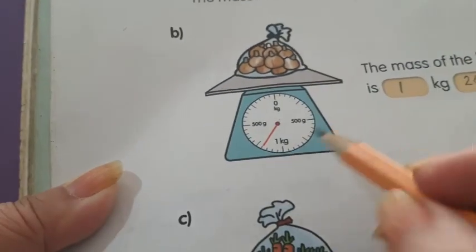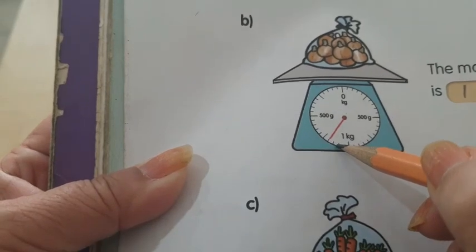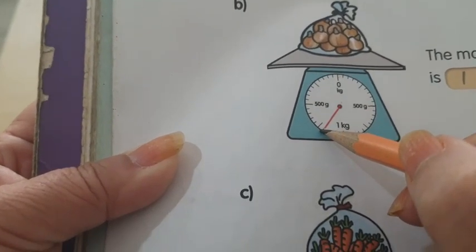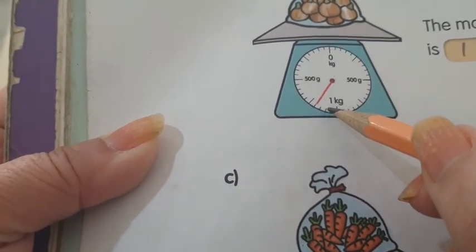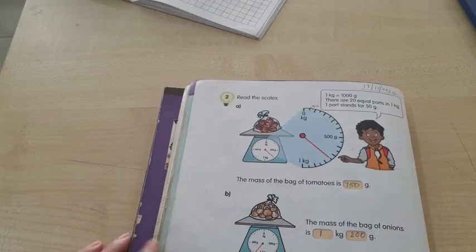50, 100, 150, 200. So I'm going to count again. Look here, the first line is 50, 100, 150, 200. Each line is 50. You have to count in multiples of 50.